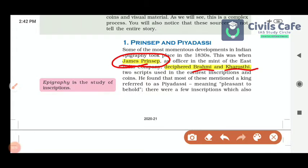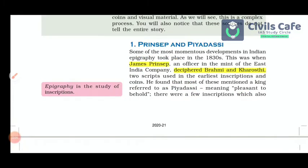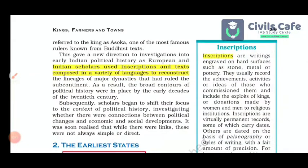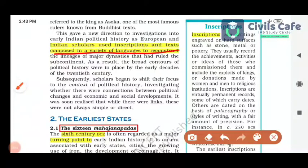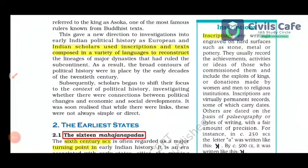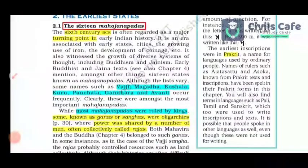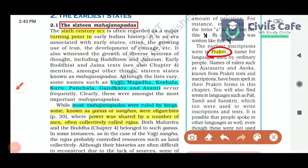Through decipherment, he discovered the word 'Piyadasi', which means 'pleasant to behold.' James Prinsep was an officer of the East India Company who deciphered the Brahmi and Kharosthi scripts. This decipherment led to many intellectual developments. Indian scholars used inscriptions and texts composed in a variety of languages to reconstruct India's past. The earliest inscriptions were made in Prakrit so that ordinary people could understand them.